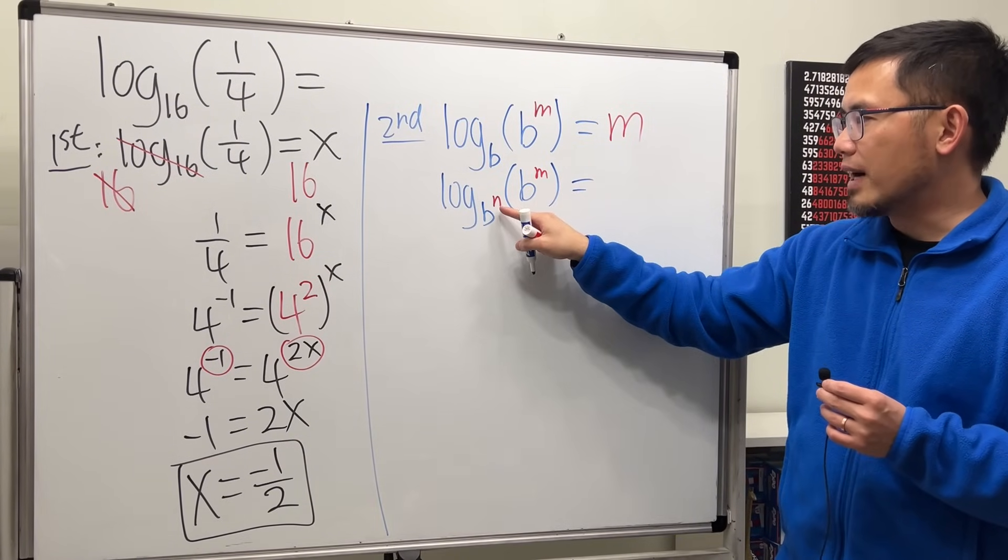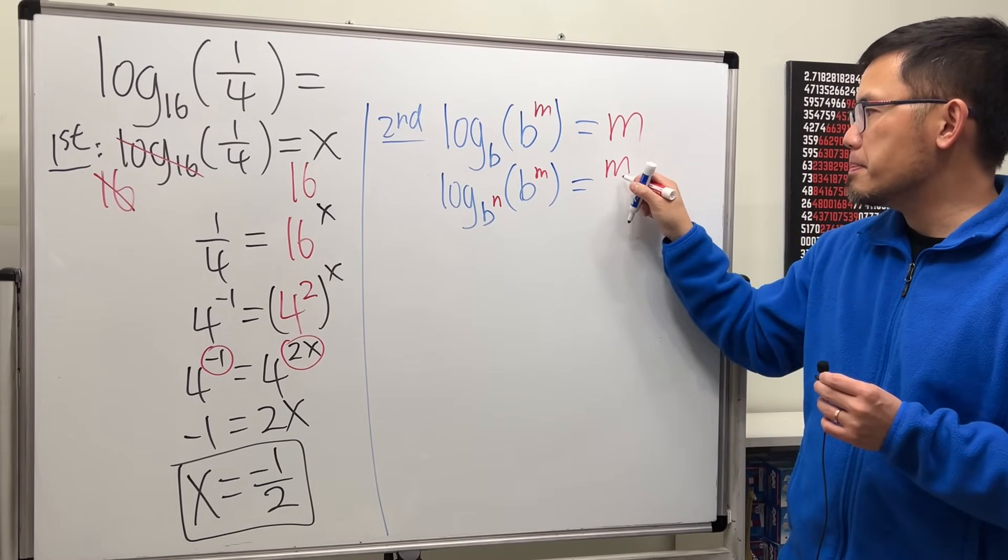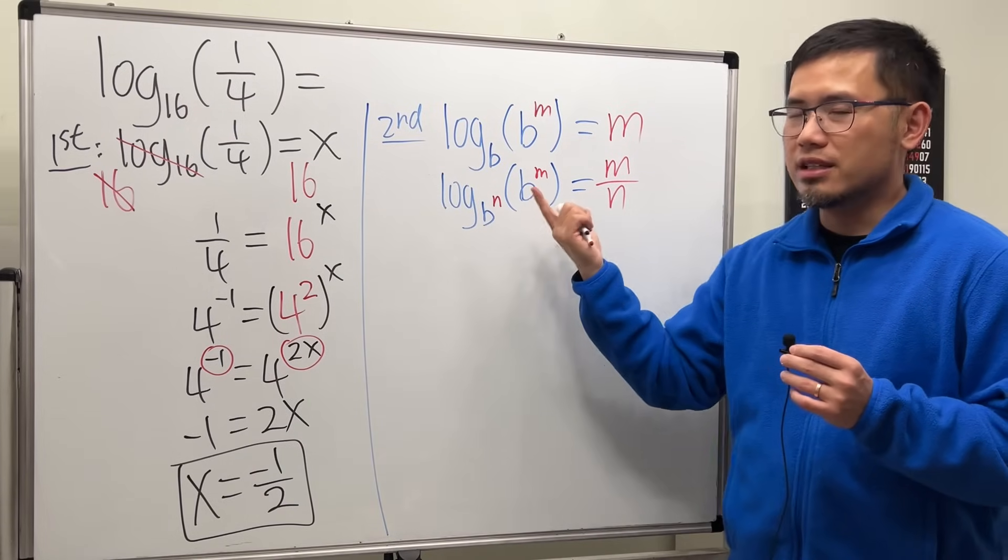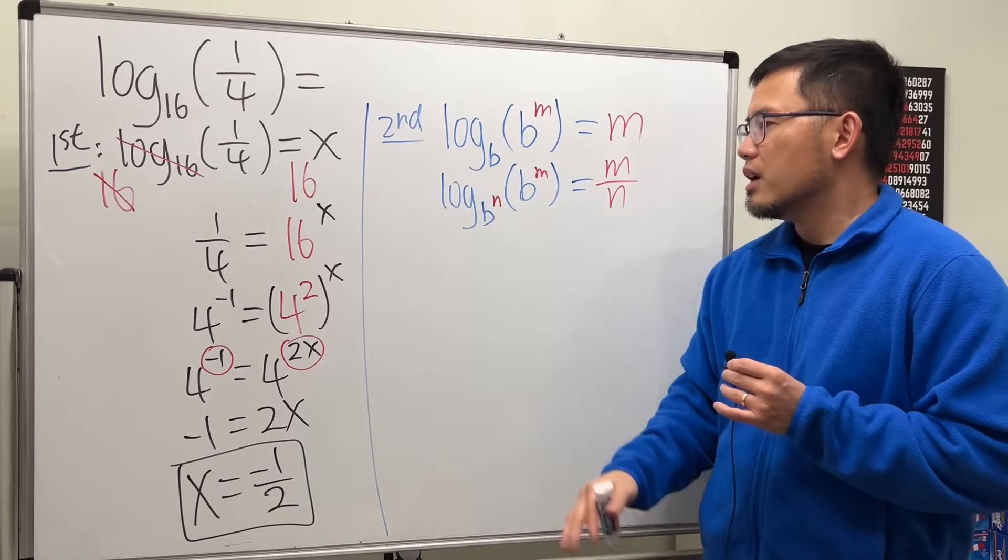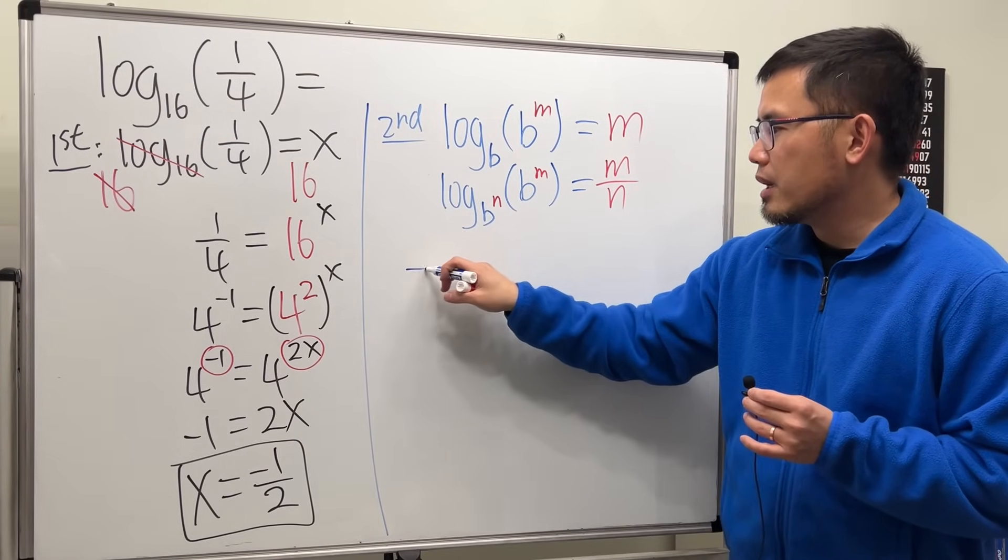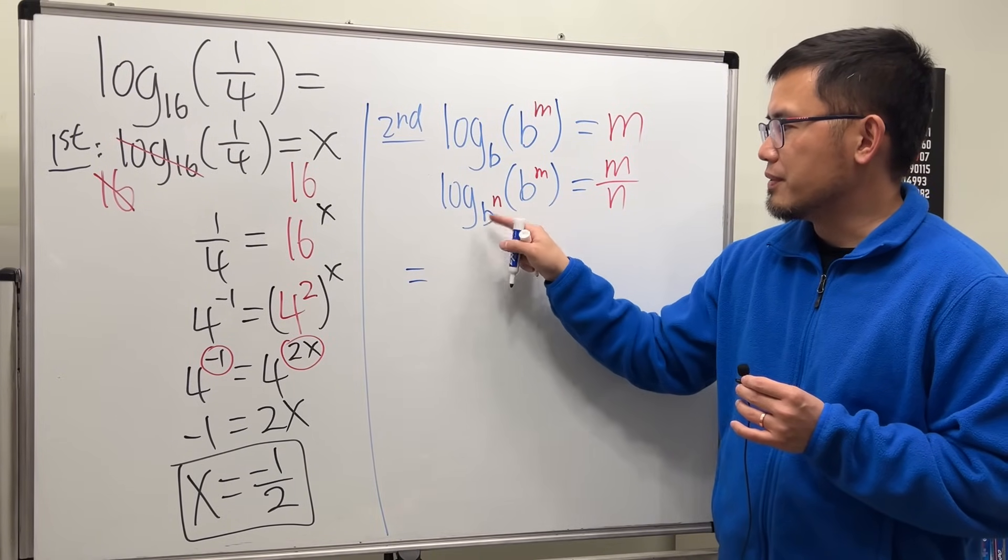In this situation, we will end up with m divided by n, so m over n. And as I said, this right here is more of a complete version. I'll prove this real quick for you so you see.